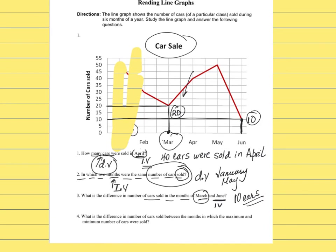Maximum, minimum. Using the points on the graph — remember that on May and January it was the peak, because the dealer was selling the maximum amount of cars. The maximum number of cars was 50; the minimum was 10. So the difference between the maximum and the minimum is 40 cars.